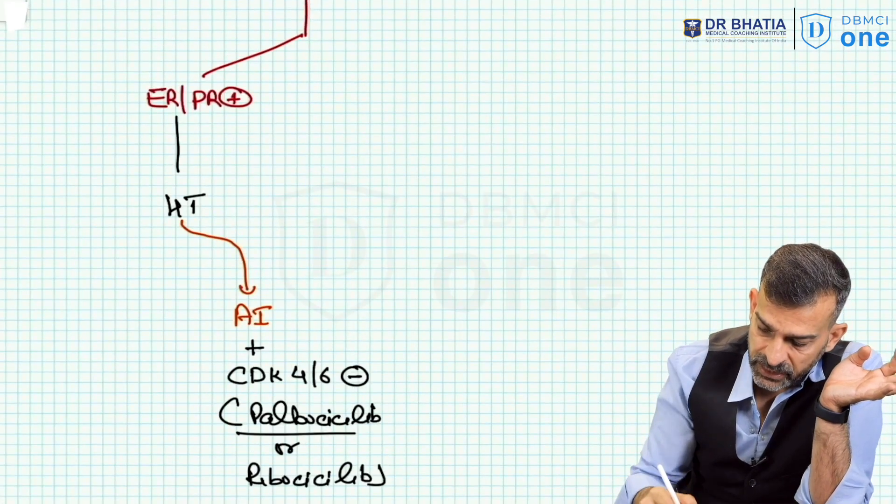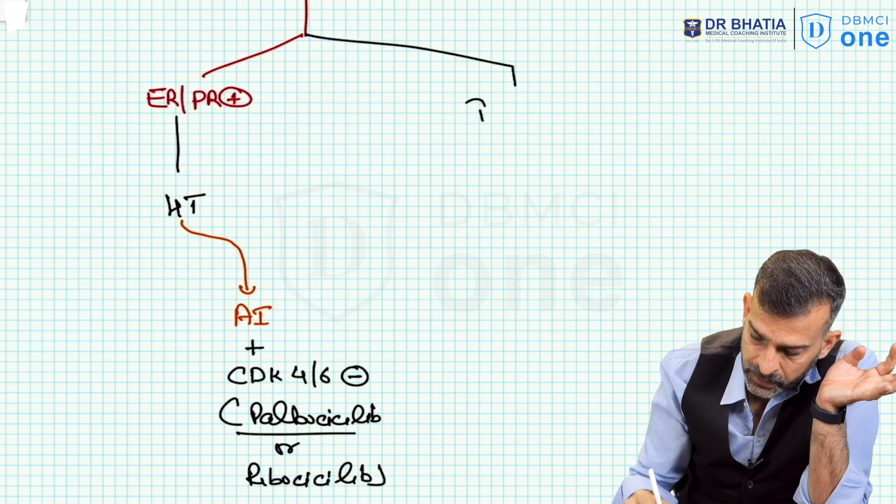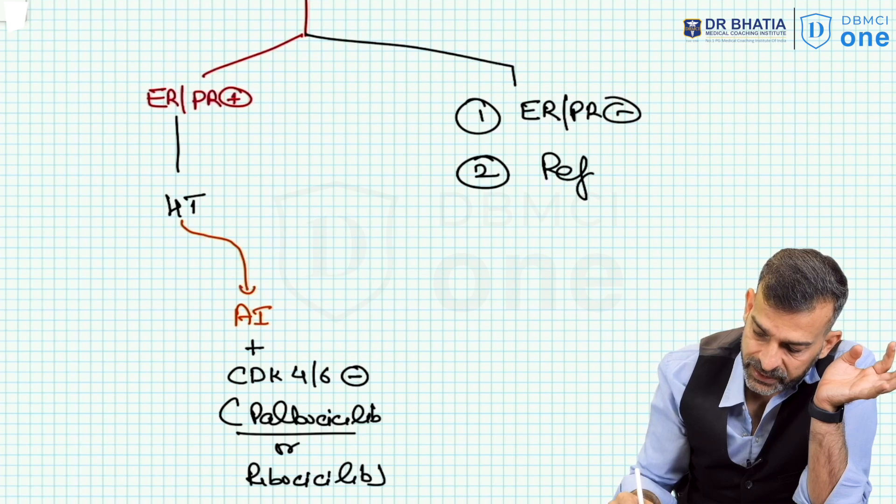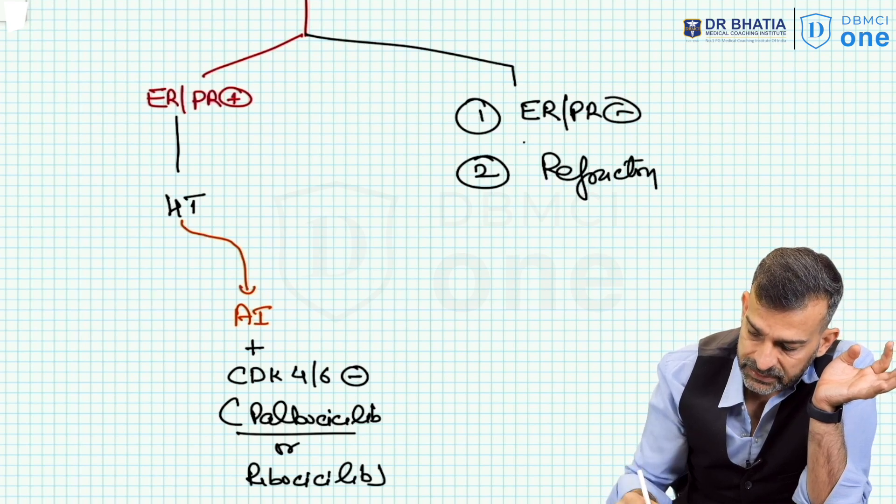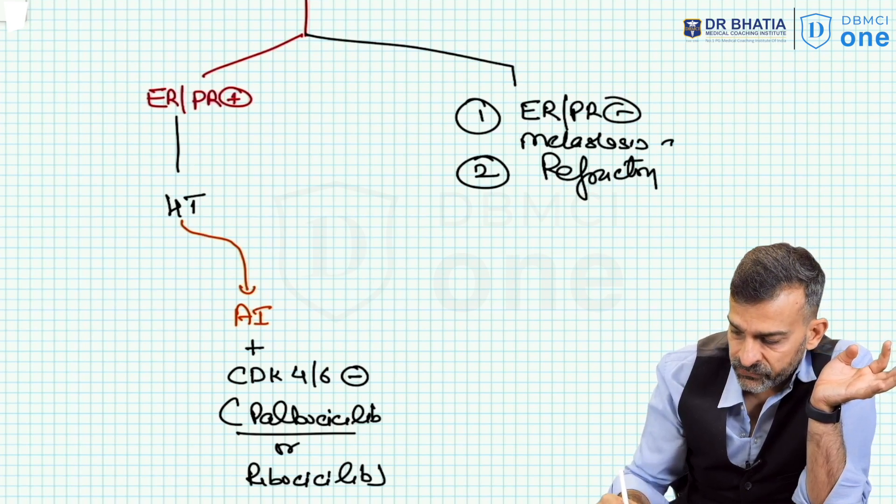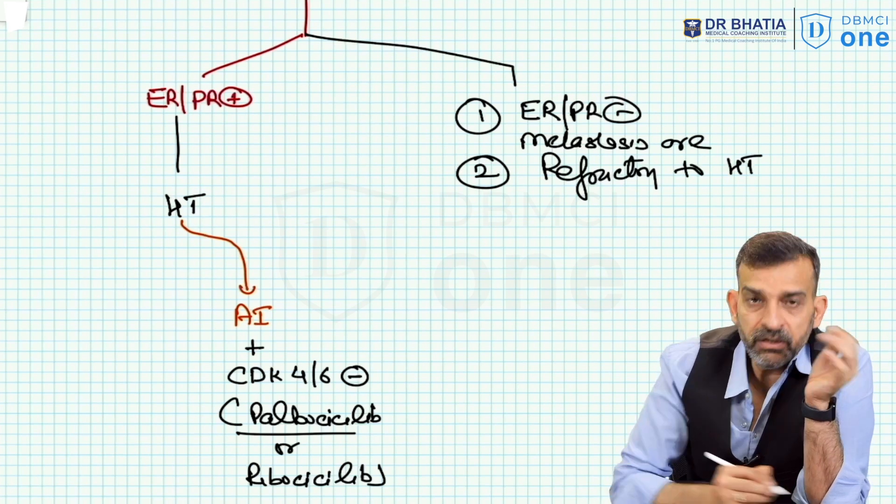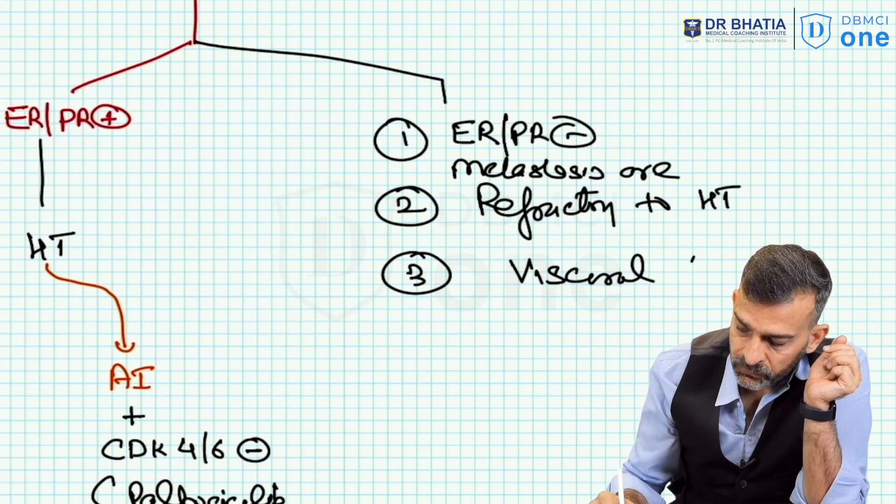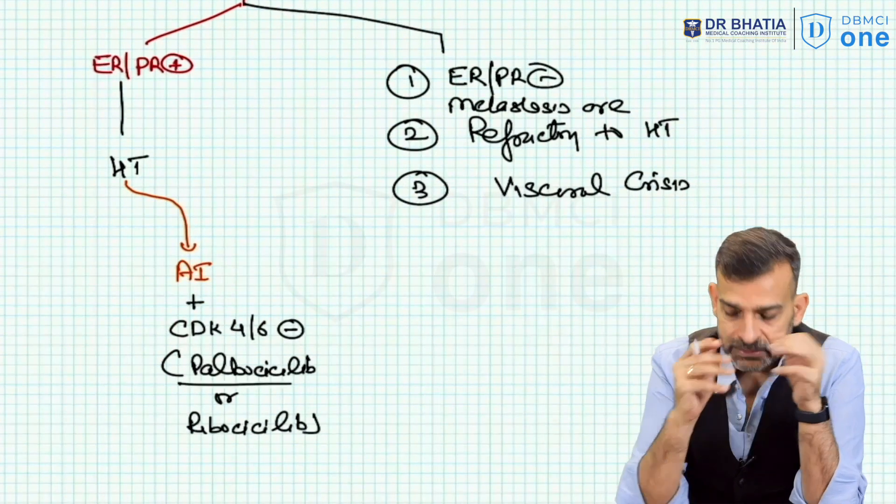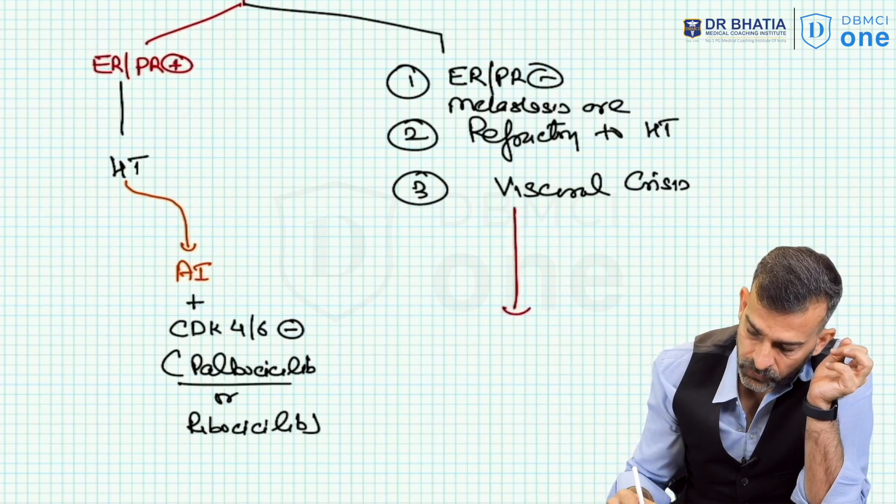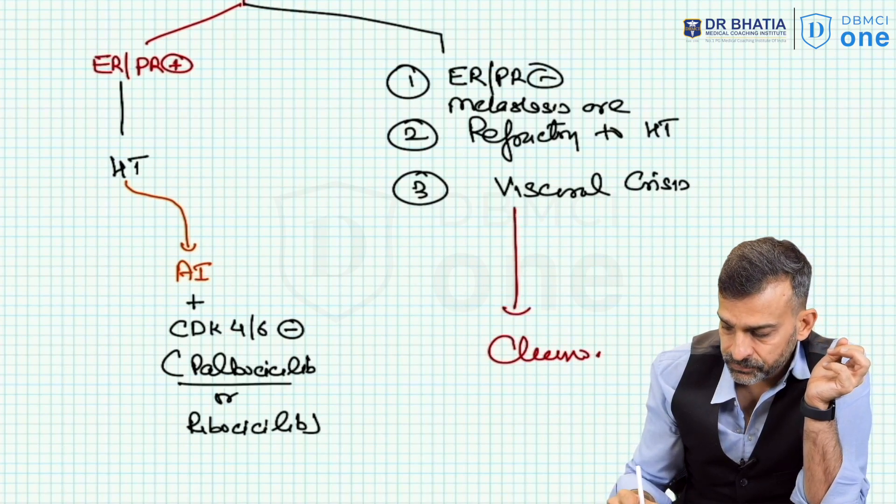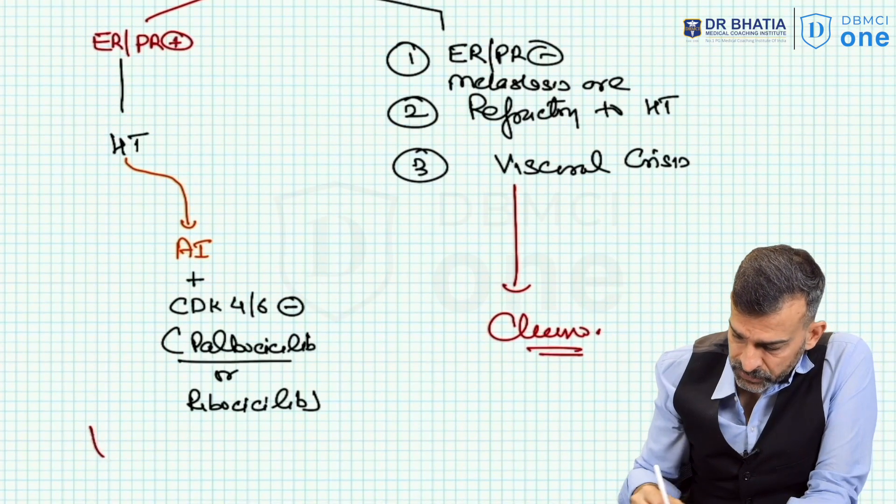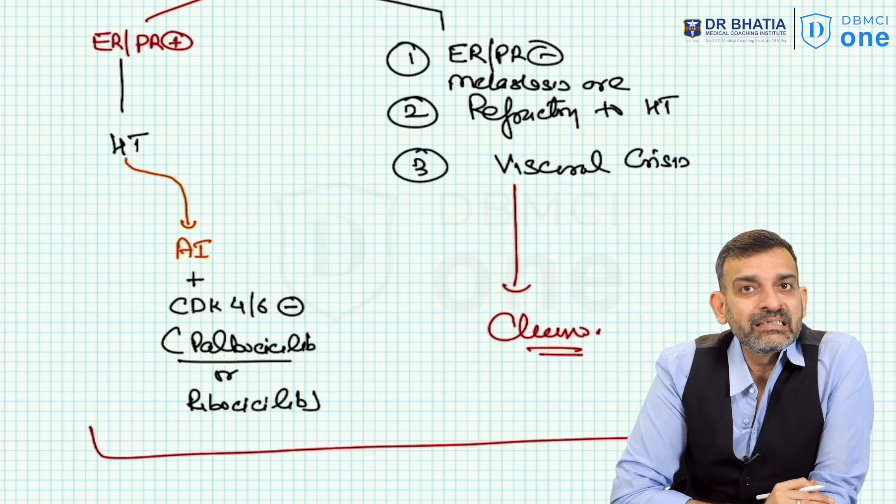But if the patient is either ER/PR negative, or patient is refractory, the patient metastasis are refractory to hormone therapy, or if the patient is having a visceral crisis happening due to the advanced disease, then in that case we offer chemotherapy to the patient.